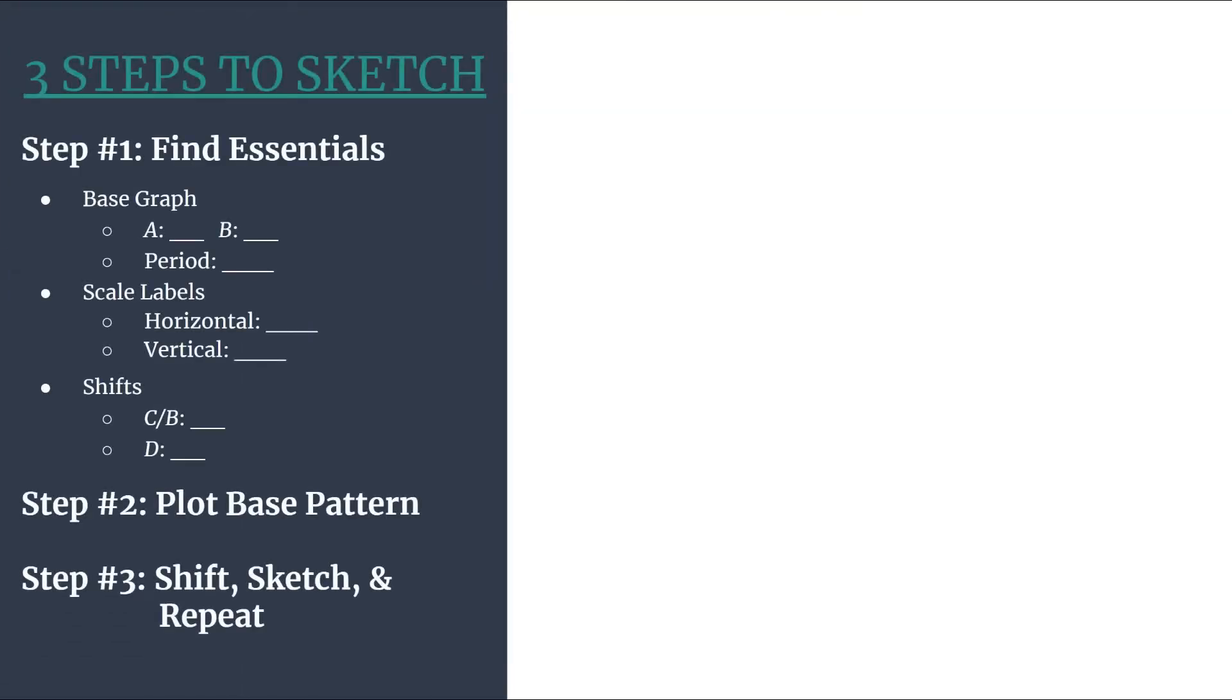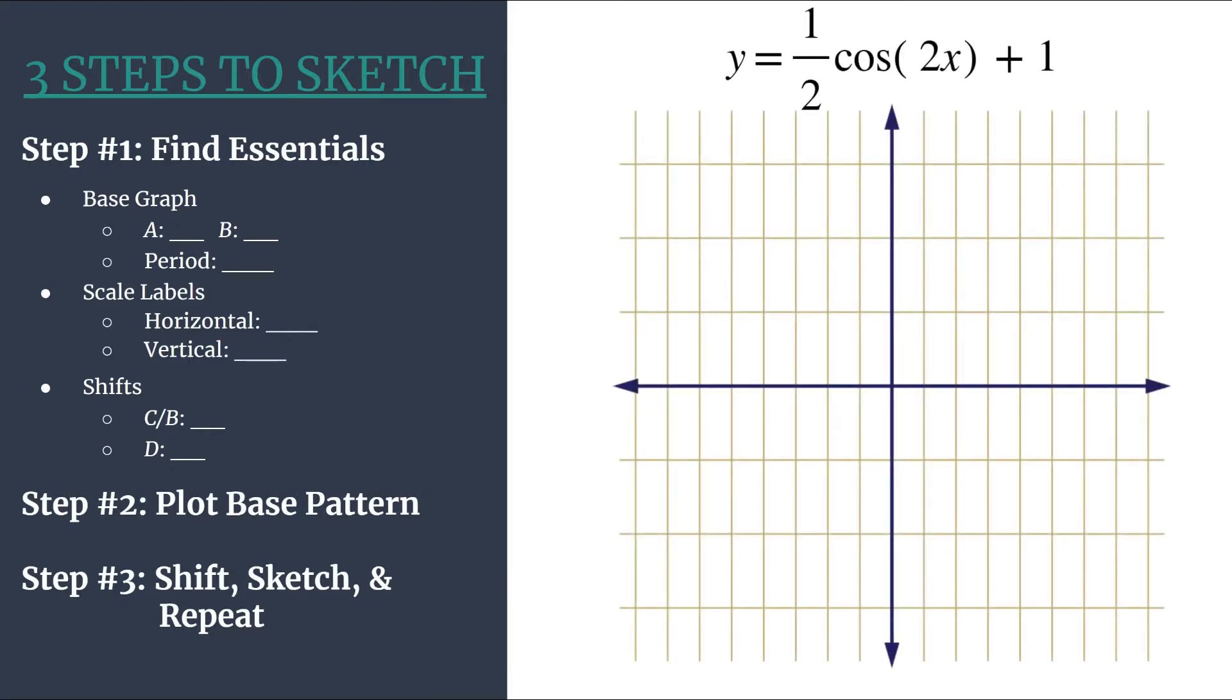Here's our outline and reminder of our equation. We see this is in the general form y equals a cosine bx minus c plus d. Of course c is zero we mentioned that earlier. But knowing this will help - we know that we do have a shift and we'll want to account for that. It's a vertical shift, that plus 1 at the end.